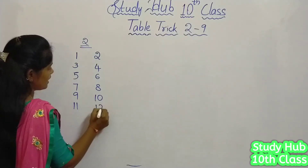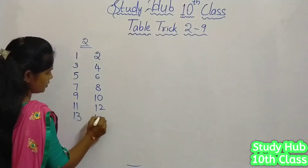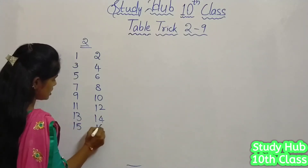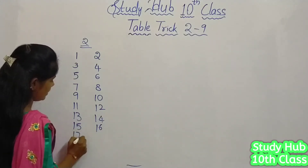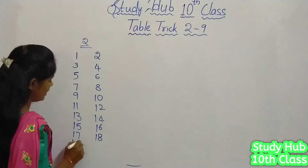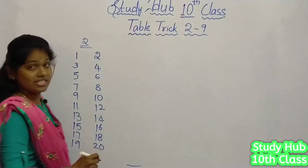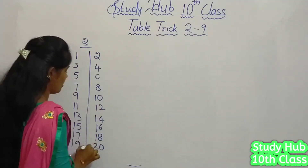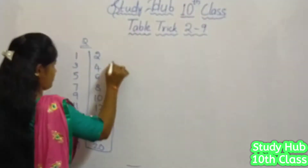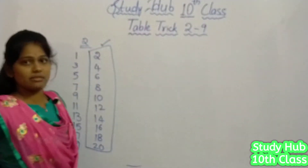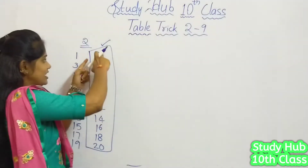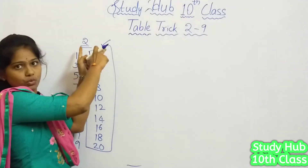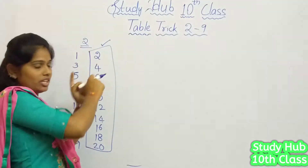Continuing: 11, 12, 13, 14, 15, 16, 17, 18, 19 and 20. Friends, the numbers which we get in the second column are called the multiples of 2. This is the simple trick we are applying on the number 2 for getting the 2 times table.